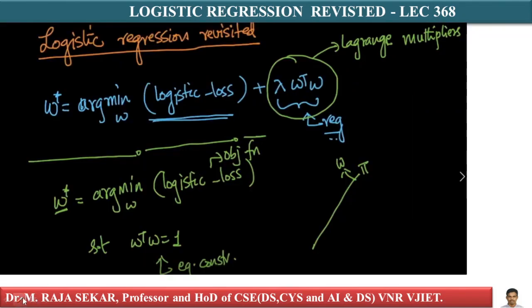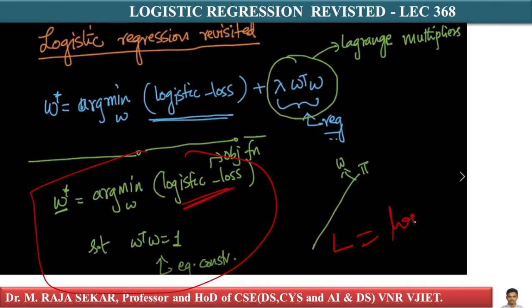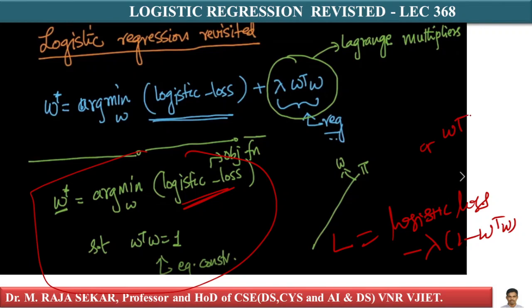I can use Lagrange's method to solve it. I write: L equals logistic loss minus lambda times (one minus w-transpose-w). Since it is an equality constraint, I can write it as one minus w-transpose-w.